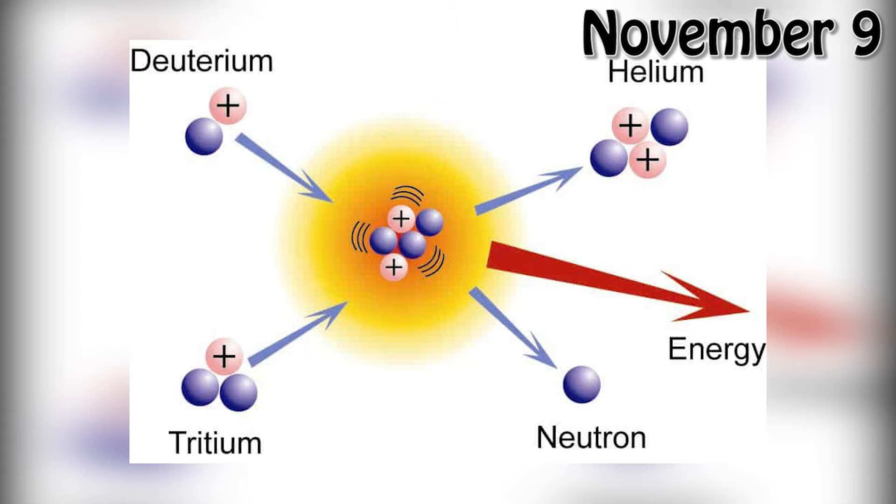Fusion is a nuclear reaction in which two or more atomic nuclei combine to form one or more different atomic nuclei and subatomic particles like neutrons and protons. During this process, energy is either released or absorbed due to two opposing forces, namely nuclear force and Coulomb force.